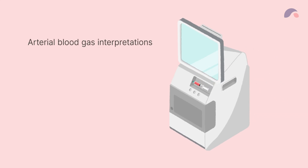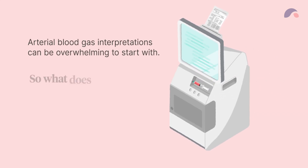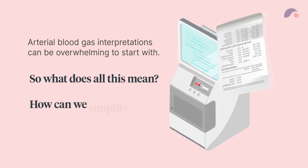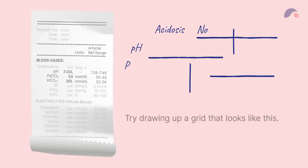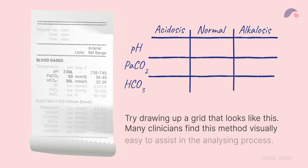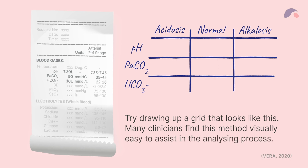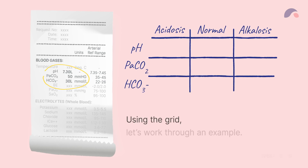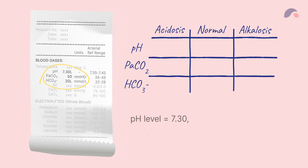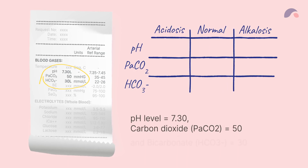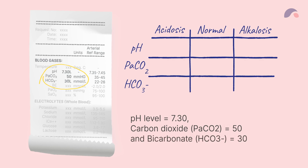Arterial blood gas interpretations can be overwhelming to start with. So what does all this mean? How can we simplify it? Try drawing up a grid that looks like this. Many clinicians find this method visually easy to assist in the analysing process. Using the grid, let's work through an example. The pH level is 7.3, carbon dioxide is 50, and bicarbonate is 30.